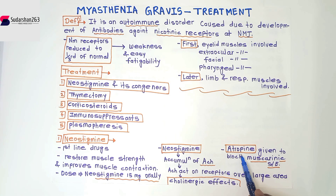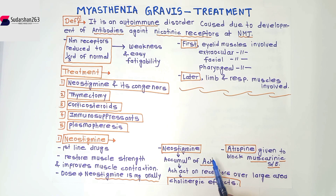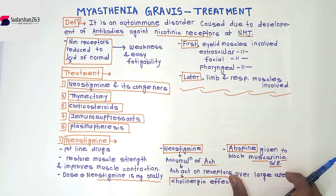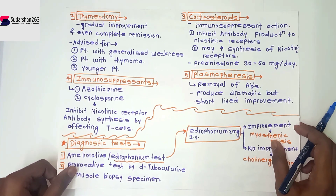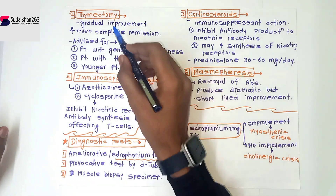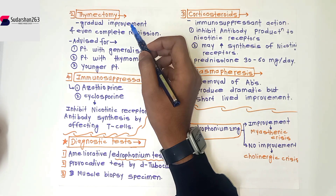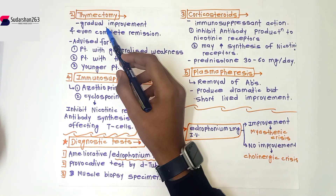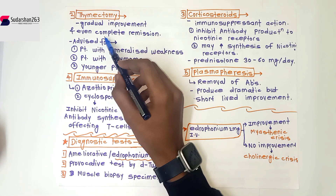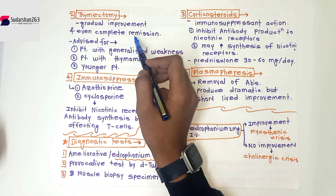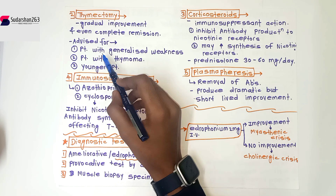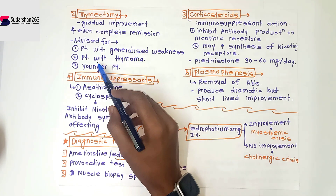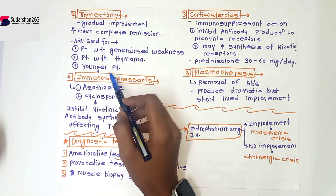Atropine is also given to block the muscarinic side effects of neostigmine — this is important. Next is thymectomy, which is the surgical removal of the thymus. Gradual improvement and even complete remission have been seen. It is advised in patients with generalized weakness, patients with thymoma, and younger patients.